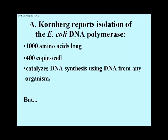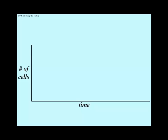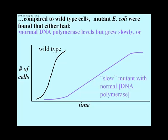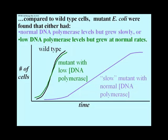Kornberg further analyzed his polymerase and showed that the enzyme was about 1000 amino acids long, present at about 400 copies per cell. He also showed that his bacterial lysates or purified enzymes could catalyze DNA synthesis using DNA from different species as a template. But there was a problem. Mutants of E. coli were found that grew slowly but still had normal levels of this polymerase. And still other mutants that had unusually low levels of this polymerase were found that grew at normal rates. In the growth curve graph, the control wild type curve appeared first, followed by the slow-growing mutant with normal polymerase levels, then the polymerase-deficient mutant that nevertheless grew at normal rates.